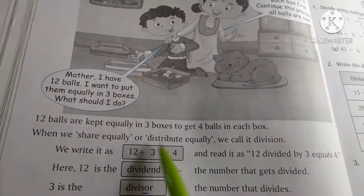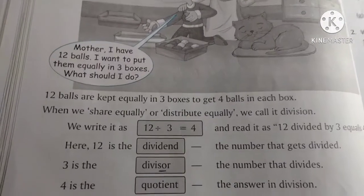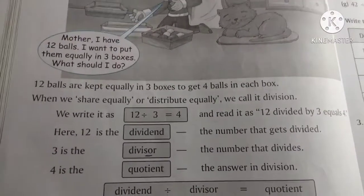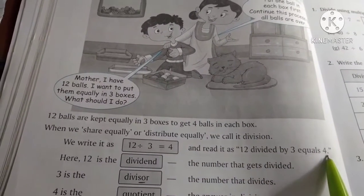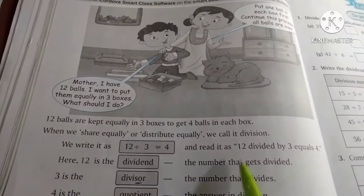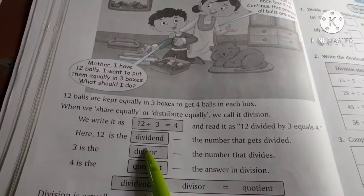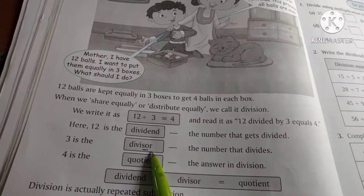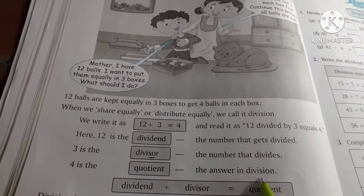When we share equally or distribute equally, we call it division. We write it as 12 divided by 3 is equal to 4. Here, 12 is the dividend — the number that gets divided. 3 is the divisor — the number that divides. 4 is the quotient — the answer in the division.